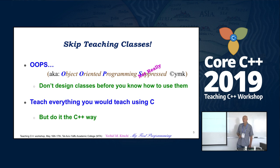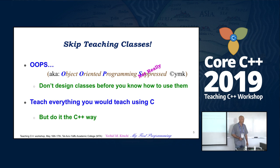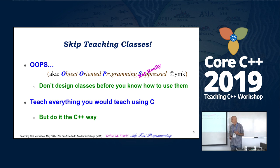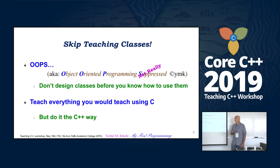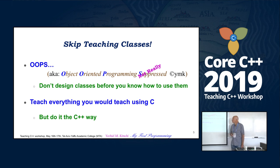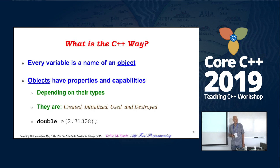I want to teach them how to use classes. I came out with an acronym: OOPS means object-oriented programming suppressed. But it's not really suppressed, because without classes I really teach object-oriented programming. I would teach everything I used to teach using C, but the C++ way. So the question is: what is the C++ way?